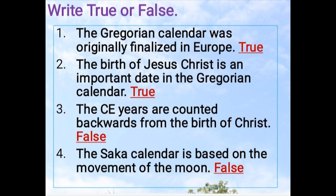Number 3: The CE years are counted backwards from the birth of Christ. The answer is False. The correct statement is: the CE years are counted forwards from the birth of Christ.